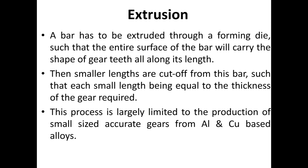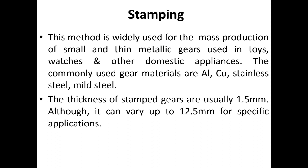Extrusion: a bar is extruded through a forming die such that the entire surface of the bar carries the shape of the gear teeth along its length. Smaller lengths are then cut off from this bar, each length being equal to the thickness of the gear required. This process is largely limited to the production of small-sized, accurate gears from aluminium and copper-based alloys.